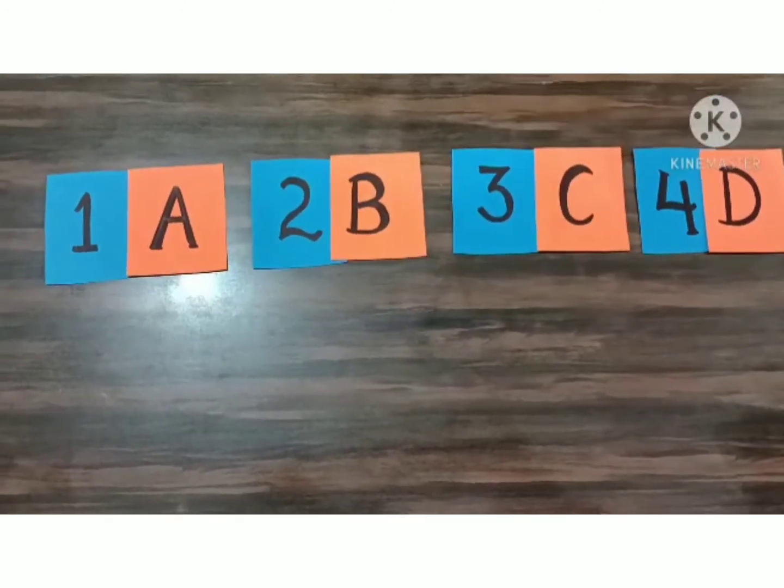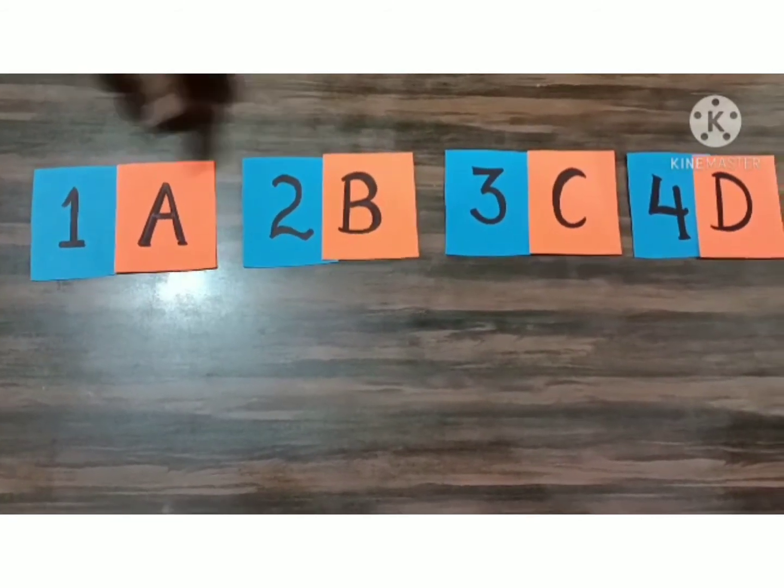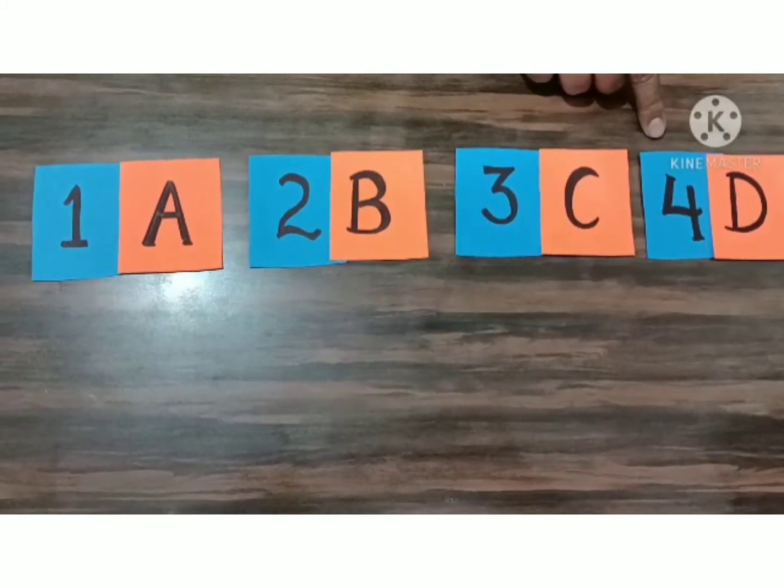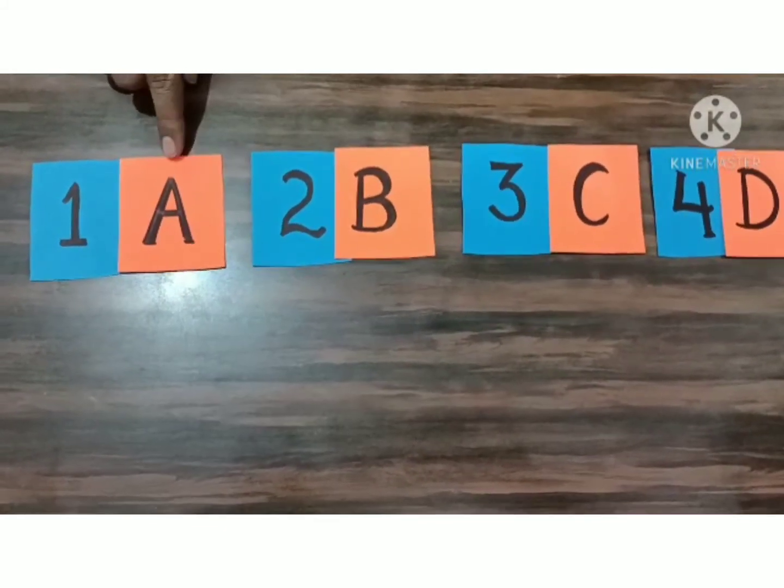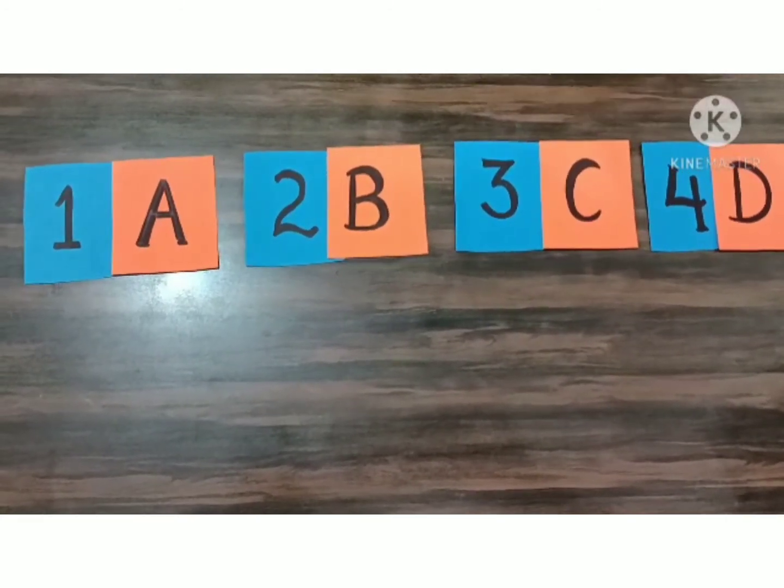Here you can see, there are number and color patterns. 1, 2, 3, and 4 are in blue color and alphabets A, B, C, D are orange colored.